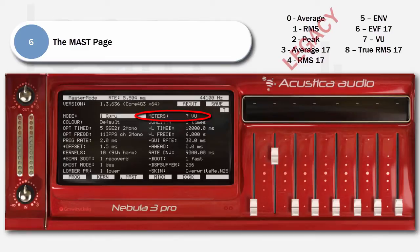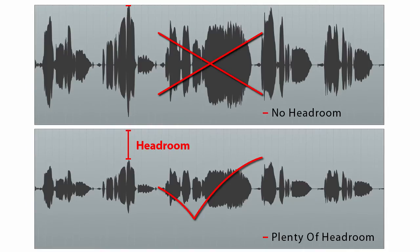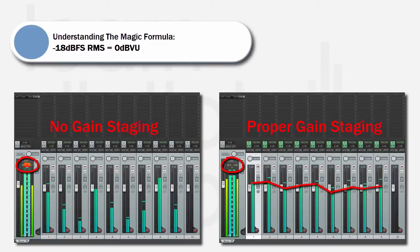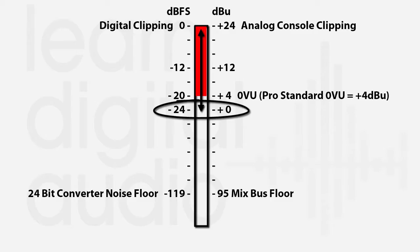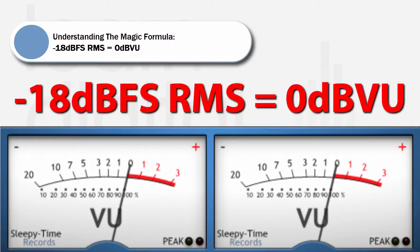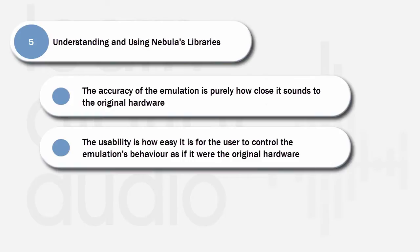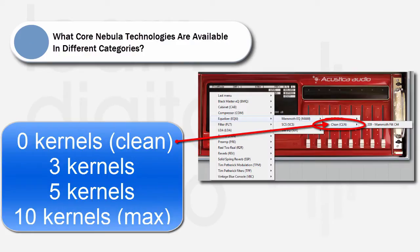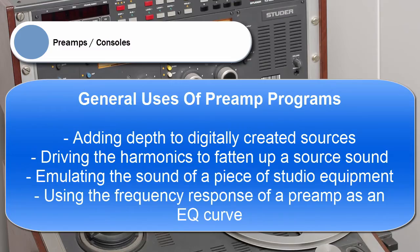In the mixing with Nebula section: the basics of gain staging and understanding how important it is in relation to Nebula, what good gain staging looks like, what exactly dBFS, RMS and dBU are, why use minus 18 dBFS instead of minus 20 dBFS or another similar value, about using the magic formula and measuring minus 18 dBFS accurately using a free insert channel plugin, about the accuracy and usability of Nebula's emulations, about how the core technology is used in preamps, consoles, EQ, reverb and compressors, and about each category of program including examples of hardware types sampled, the general use of each category and a review of that accuracy and usability.